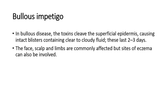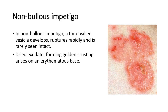In bullous disease, the toxins cleave the superficial epidermis, causing intact blisters containing clear to cloudy fluid. These last two to three days. The face, scalp, and limbs are commonly affected, but sites of eczema can also be involved. In non-bullous impetigo, a thin-walled vesicle develops, ruptures rapidly, and is rarely seen intact. Dried exudate forming golden crusting arises on an erythematous base.